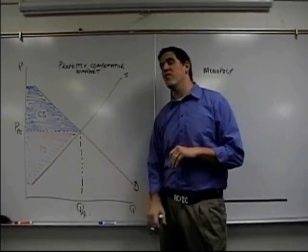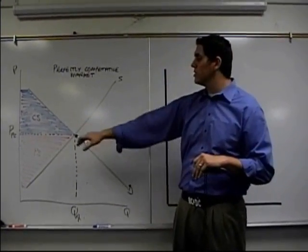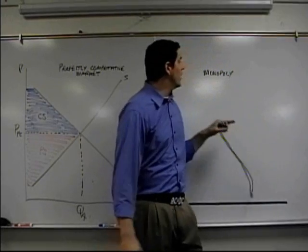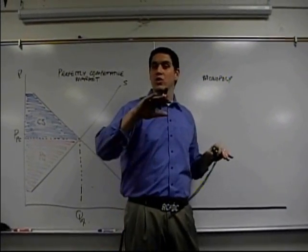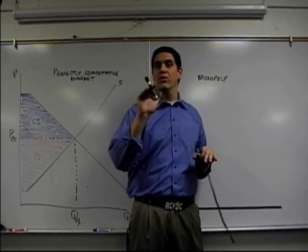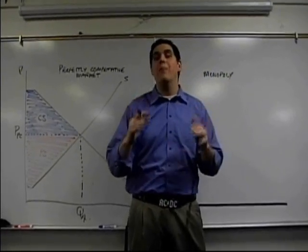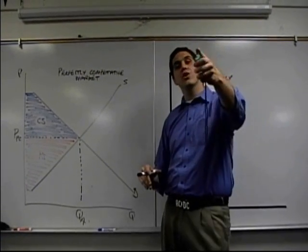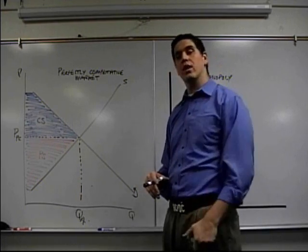Over here we have a perfectly competitive market which shows you the consumer surplus and producer surplus. We're going to show you over here what a monopoly looks like, consumer surplus, producer surplus, and something else called deadweight loss, which shows you that monopoly is inefficient. I'm going to show you the concept in 90 seconds. Here we go.